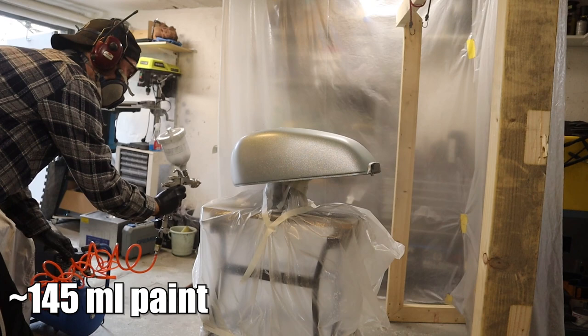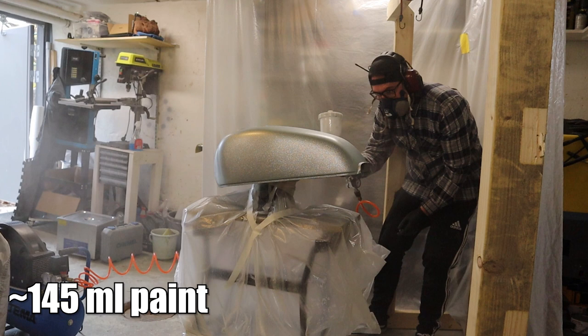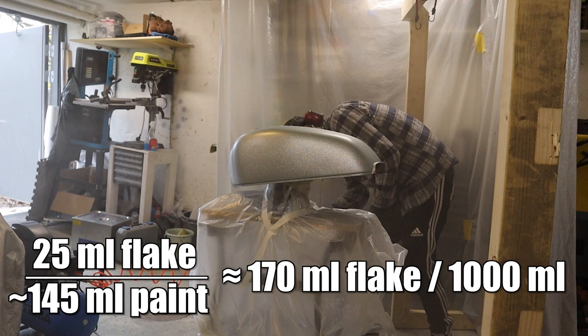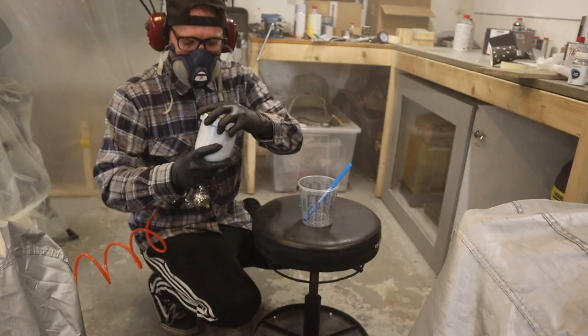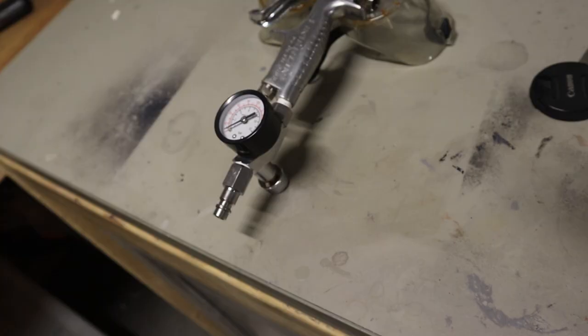So for clarity's sake, I mixed up 140 to 150 milliliters of sprayable product. To that I added 25 milliliters of flake. I took no chances this time. As soon as the product was in the gun, I was constantly agitating to keep the flake from settling. Also, I poured the mixture out between coats and sprayed a small amount of thinners through the gun for good measure.